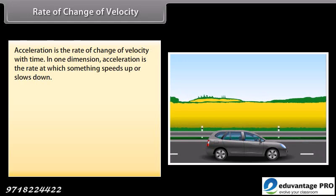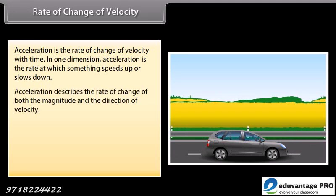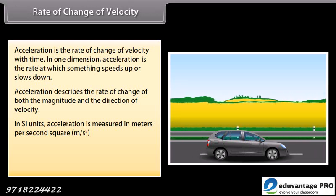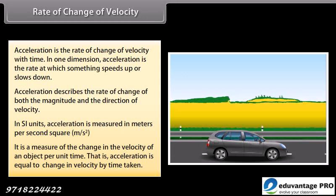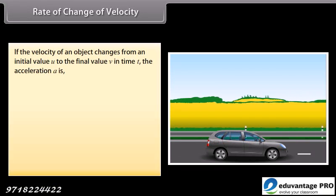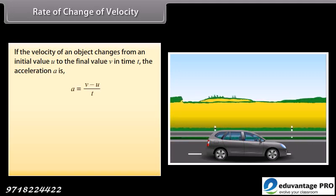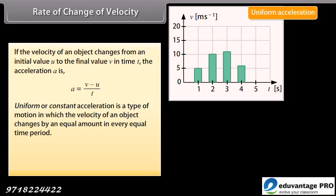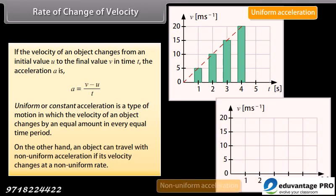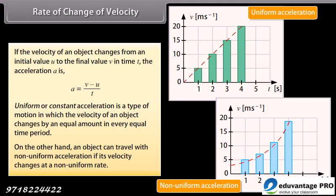Rate of change of velocity. Acceleration is the rate of change of velocity with time. In one dimension, acceleration is the rate at which something speeds up or slows down. It describes the rate of change of both the magnitude and the direction of velocity. In SI units, acceleration is measured in meters per second squared. Acceleration A = (V - U) / T, where V is final velocity, U is initial velocity, and T is time. Uniform acceleration means the velocity changes by an equal amount every equal time period; non-uniform acceleration means the velocity changes at a non-uniform rate.